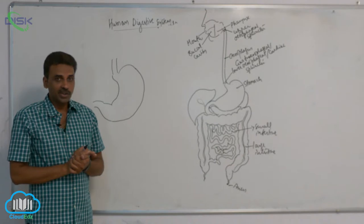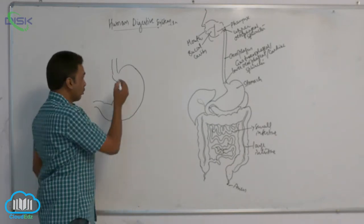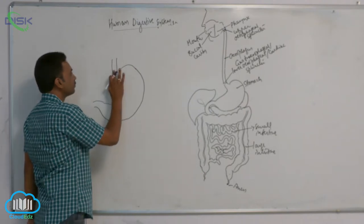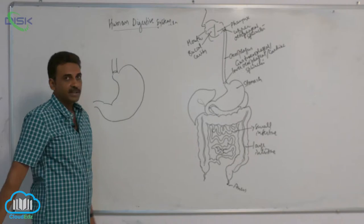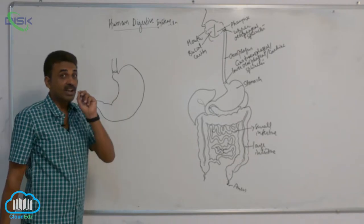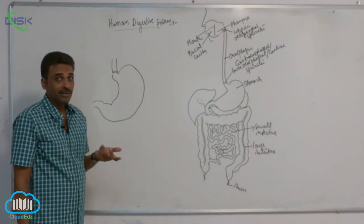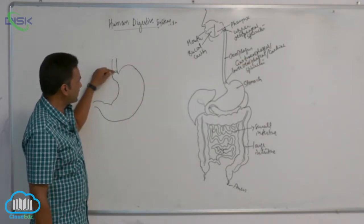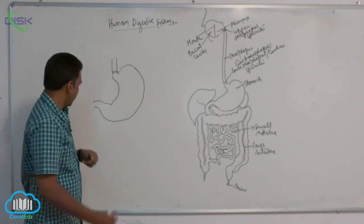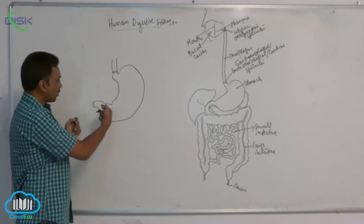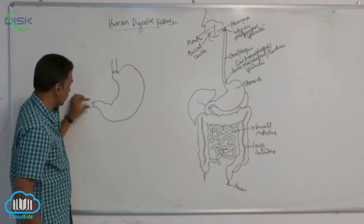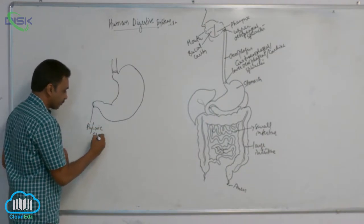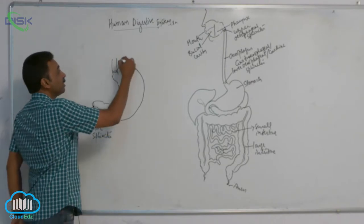Looking at the internal structure, the opening into the stomach is called the cardia, and it is guarded by a sphincter called the cardiac sphincter. On the other end, there is another sphincter. That opening is called the pylorus, and it is guarded by the pyloric sphincter.